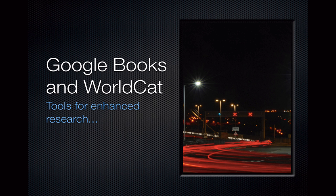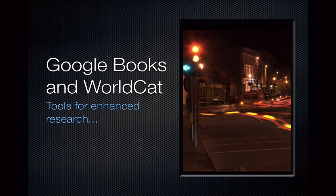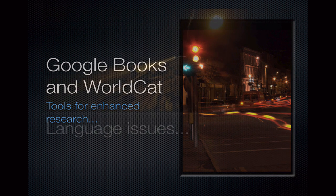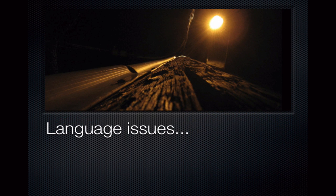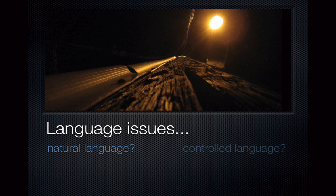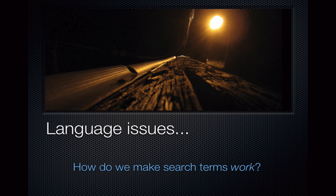Let's spend a few minutes talking about how to effectively navigate between Google Books and WorldCat for better research. Before we begin, however, let me say a few words about search language. When we Google something, our search terms reflect natural language — we enter whatever terms we naturally use to describe our topic and Google fetches results. However, databases like library catalogs use controlled language to organize information and make it findable.